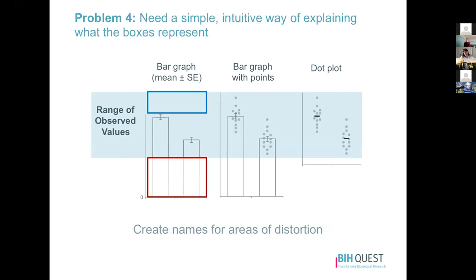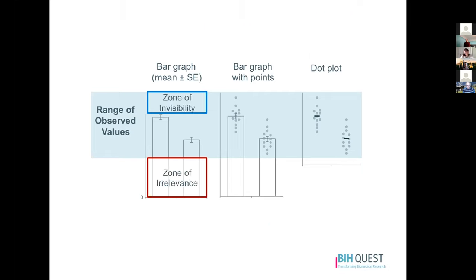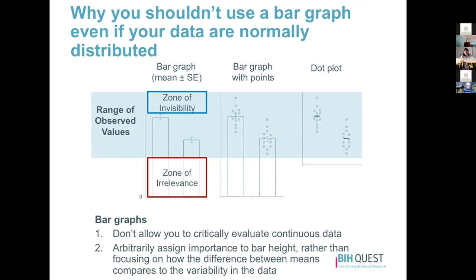Now I have boxes but no explanation for them, so I name them: the Zone of Invisibility and the Zone of Irrelevance. This works well for publication. If sharing in a talk or on social media, I might add a title like 'Why you shouldn't use a bar graph, even if your data are normally distributed,' and highlight take-home messages at the bottom: bar graphs don't allow you to critically evaluate continuous data, and they arbitrarily assign importance to the height of the bar instead of focusing on the amount of overlap between groups.